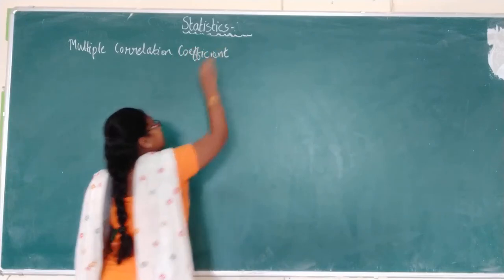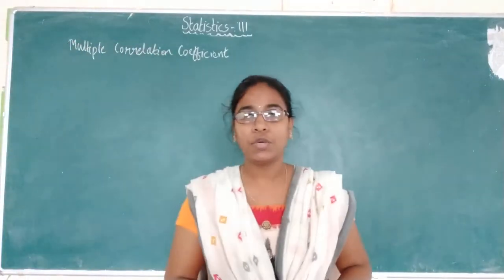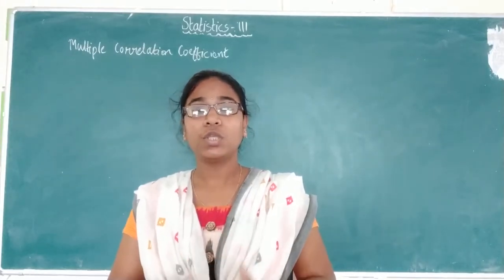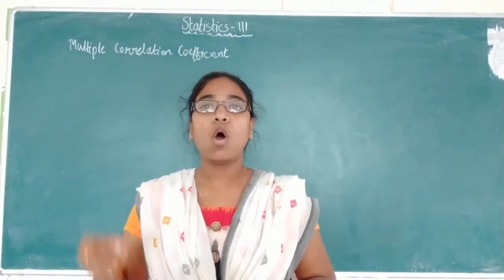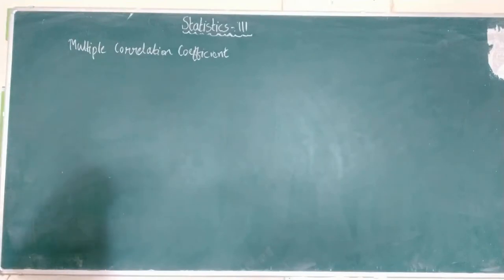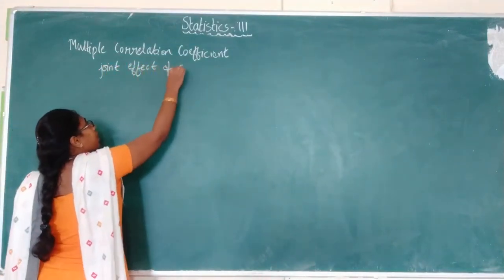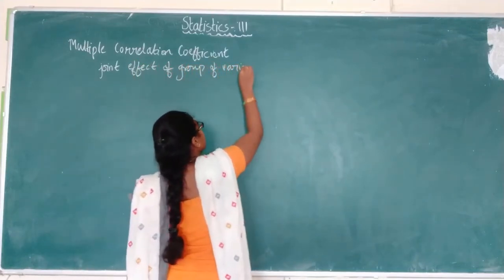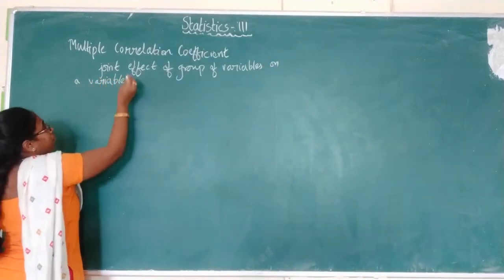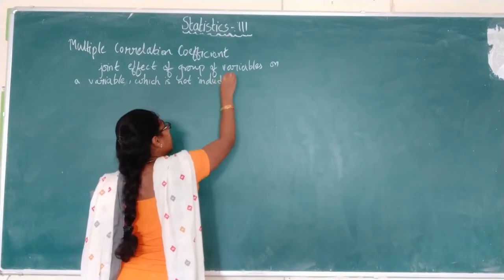So under correlation only, it is the next topic under correlation itself, that is multiple correlation coefficient. The name indicates multiple, that means we have many. So the joint correlation coefficient, or the joint relationship between the group of variables and the variable which is not included in the group, is called multiple correlation coefficient. Multiple correlation coefficient is the joint effect of a group of variables on a particular variable which is not included in that group.